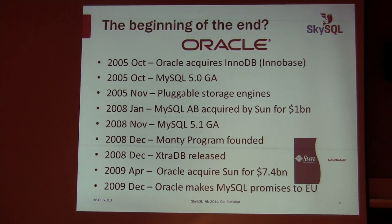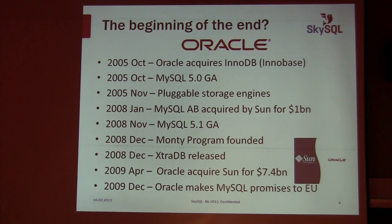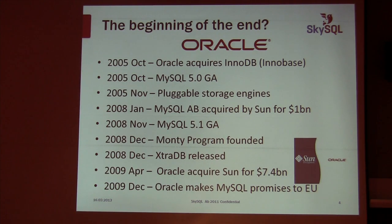Half the employees went drinking, and the other half tried to be nice to the Sun people. MySQL AB was acquired for a billion dollars, which is a fairly good amount of money. It wasn't actually a very bad match, because Sun was doing a lot of open source stuff, so it fit quite well with what MySQL was doing.